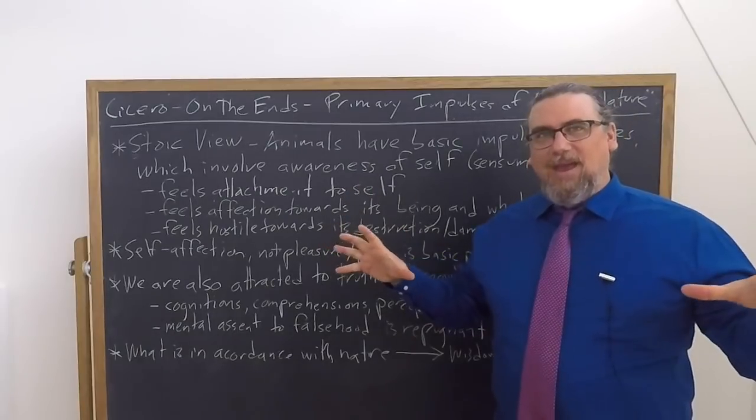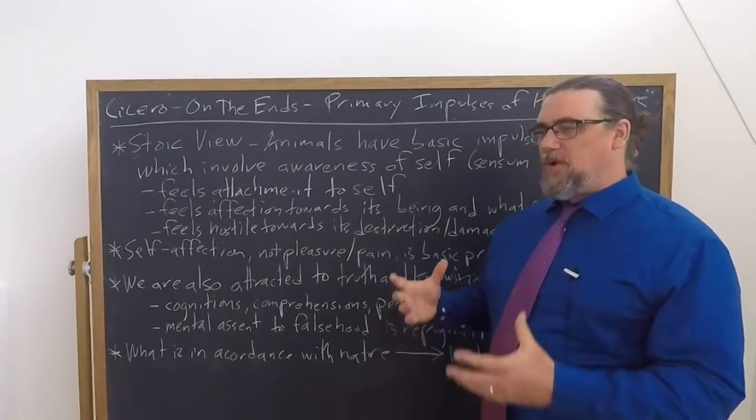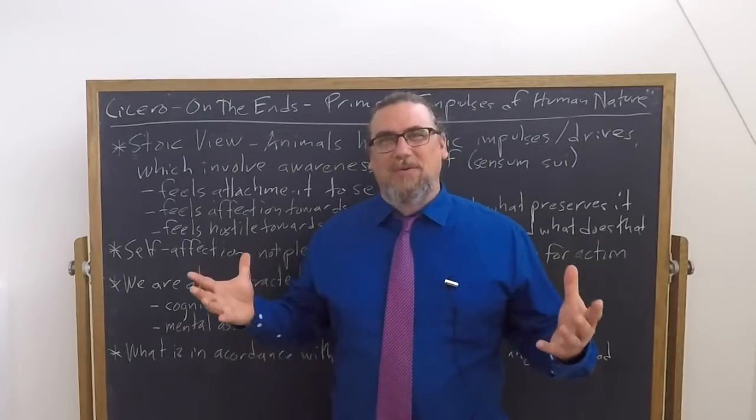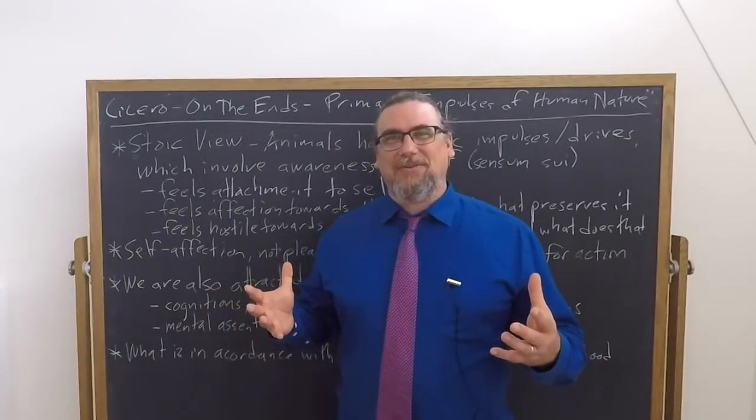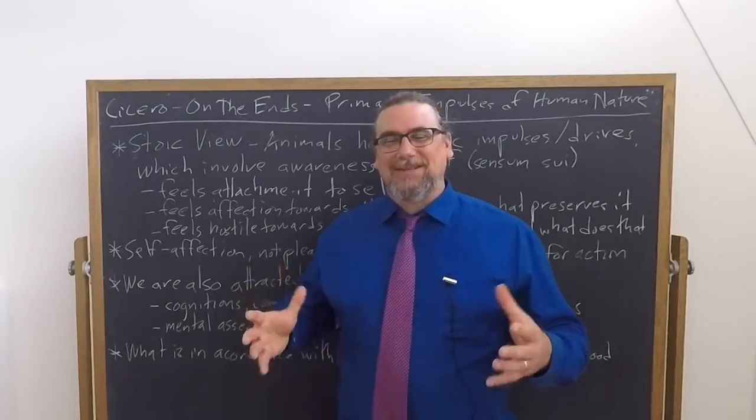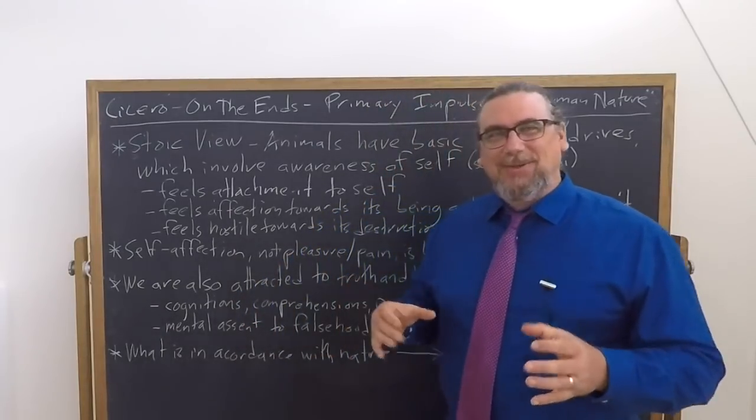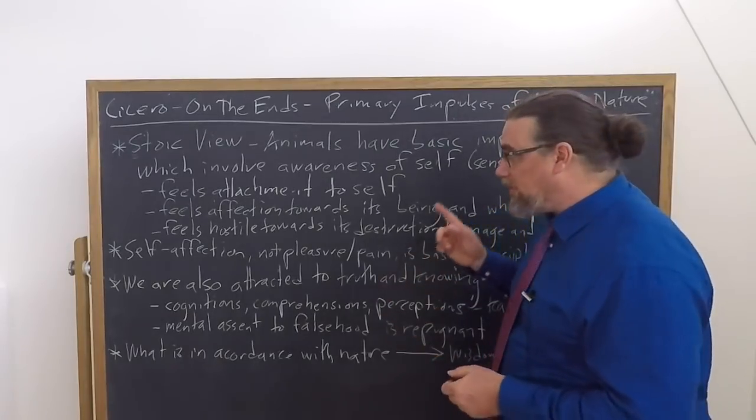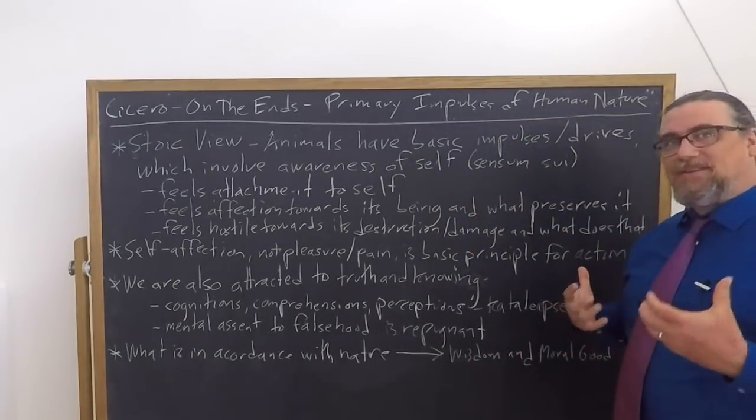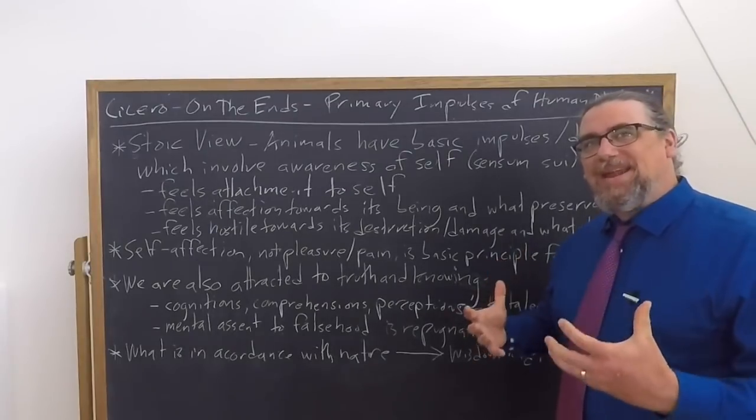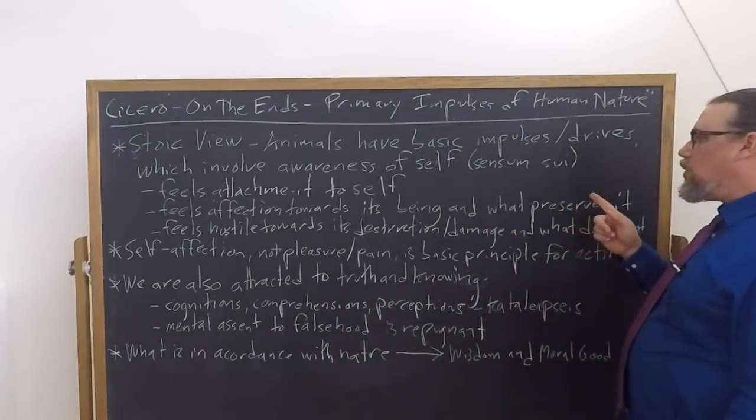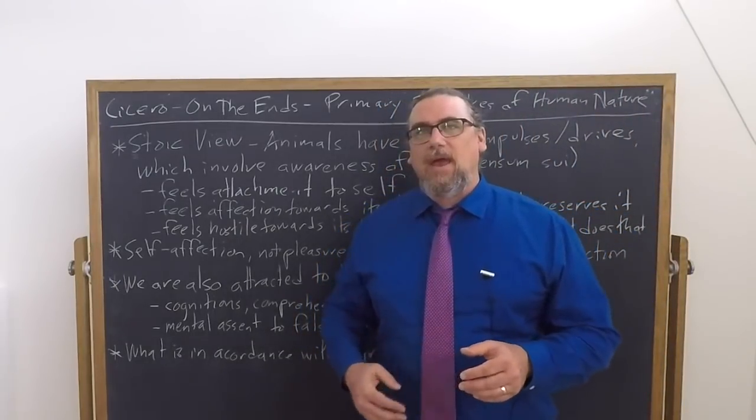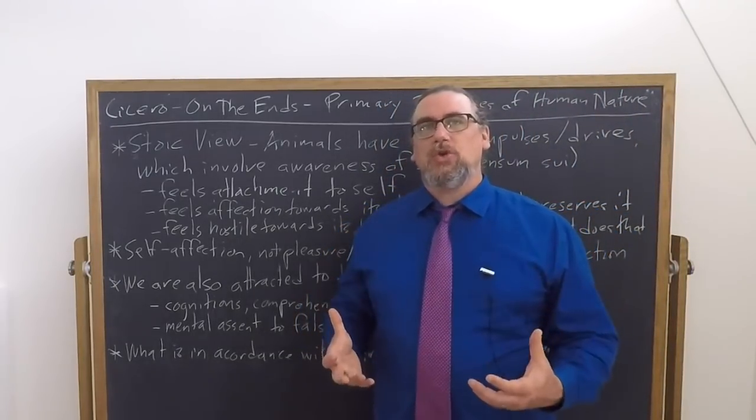So it's not just the sheer act of being, it's being the kind of thing that it is. So for a baby being that wriggling thing that has little control over its own limbs and is feeling all sorts of things that it doesn't know how to process. But also it's relation to other things. And so it feels affection towards its being, it desires to maintain that and what preserves it. Or we could go a little bit further and say what conduces to it.